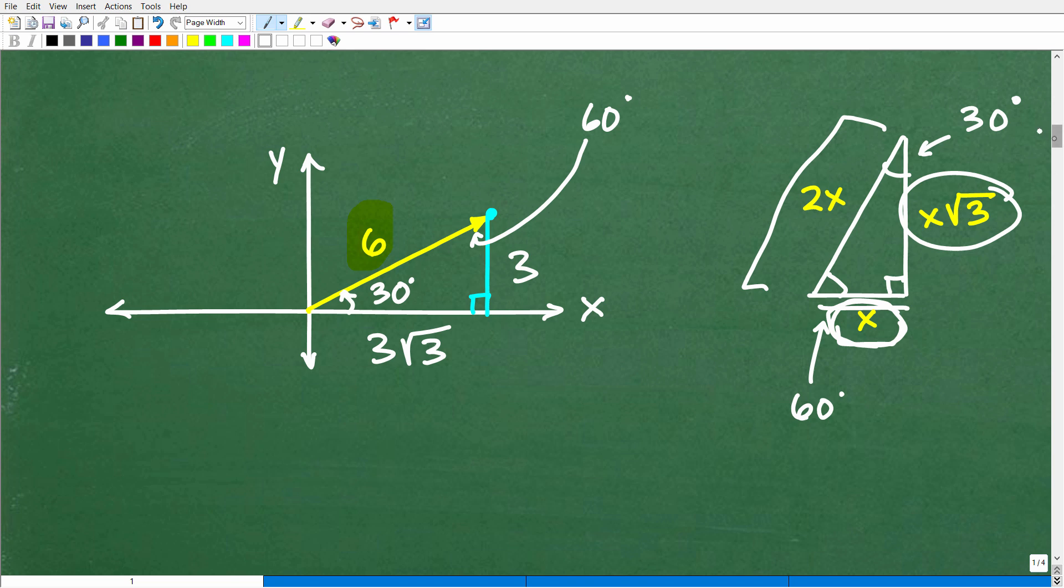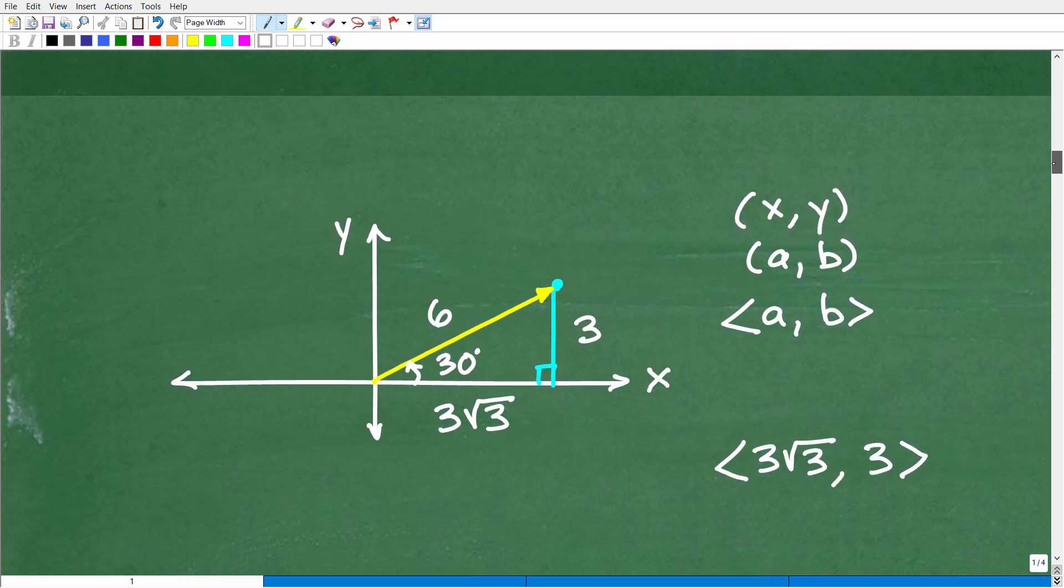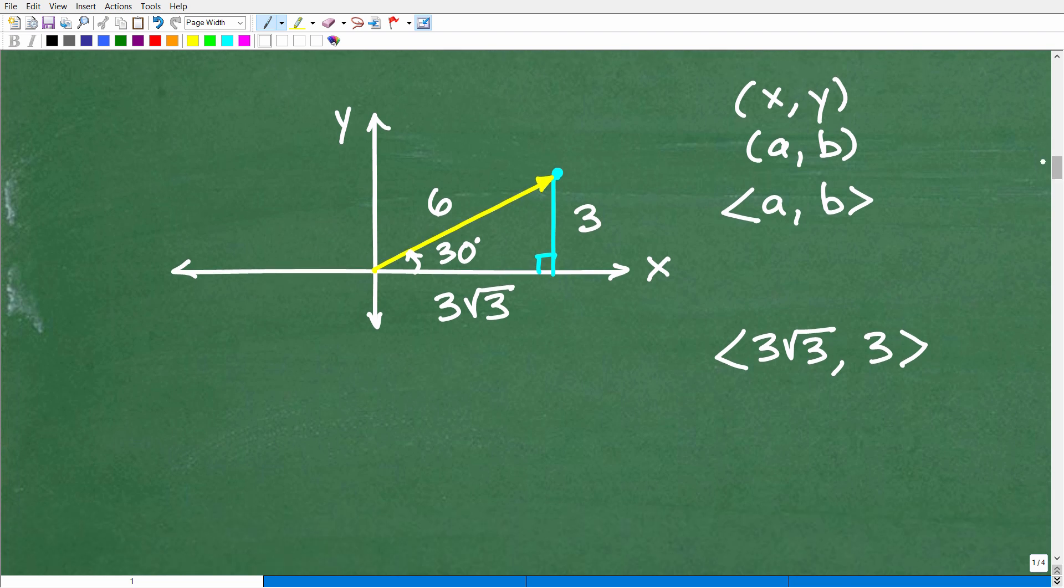Let's go ahead and now put this together. This is the heavy work to do in this problem, and actually this is pretty easy stuff. Let's put it all together and write this vector now. We have the length of this 30, 60, 90 right triangle that represents the components to this vector. This is three, this is three square root of three, by the way.